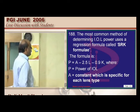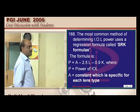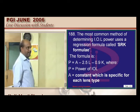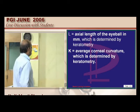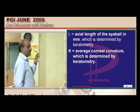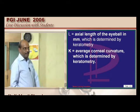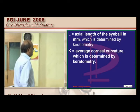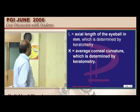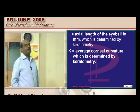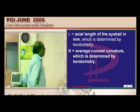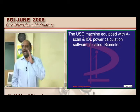The power is equal to A minus 2.5 into L minus 0.9 into K, where A is the constant specific for every lens type of that IOL, L is the axial length of the eyeball in millimeters, and K is the corneal curvature — both measured using keratometry. Axial length and keratometry are the two measurements required for IOL power calculation using the SRK formula.